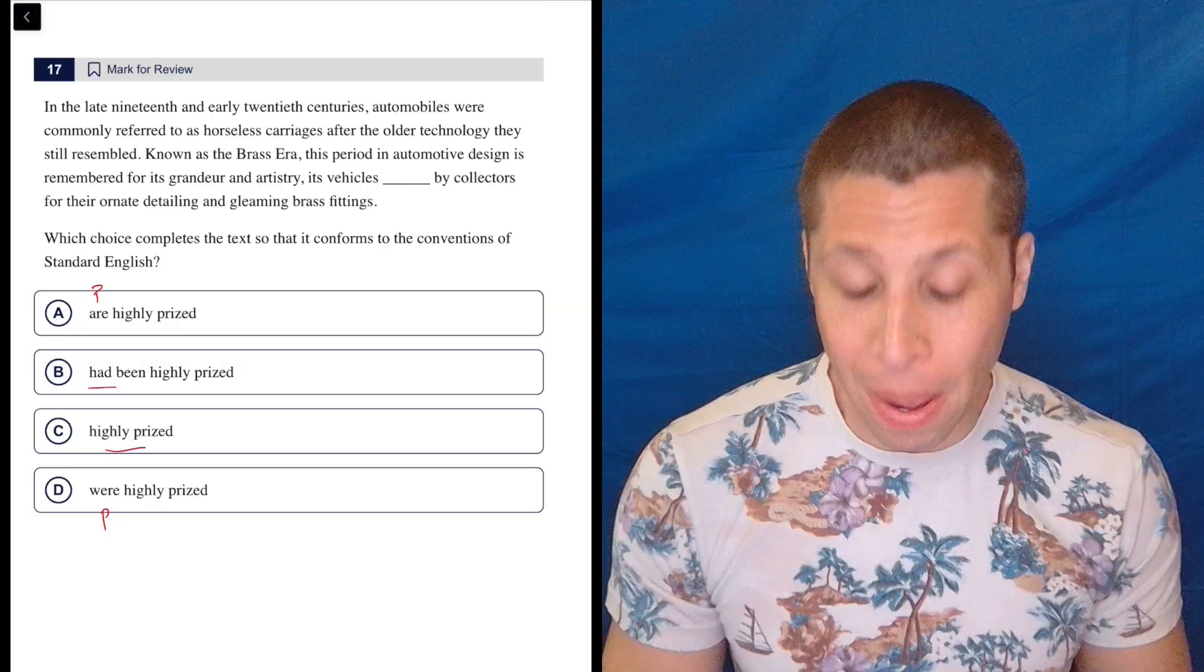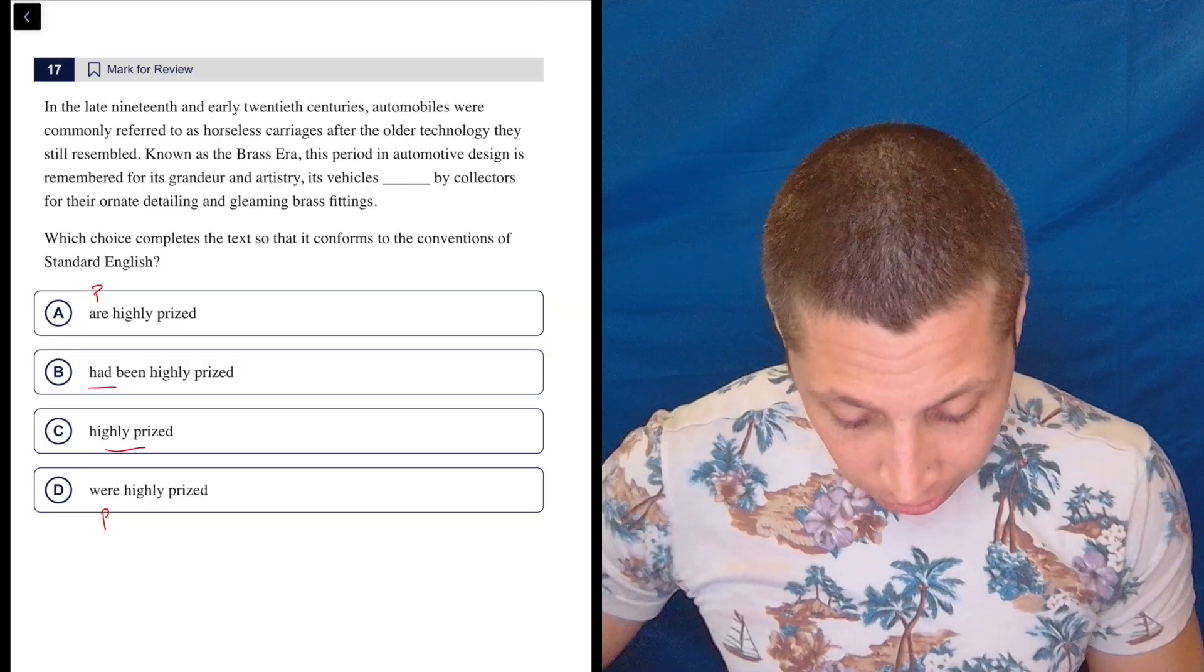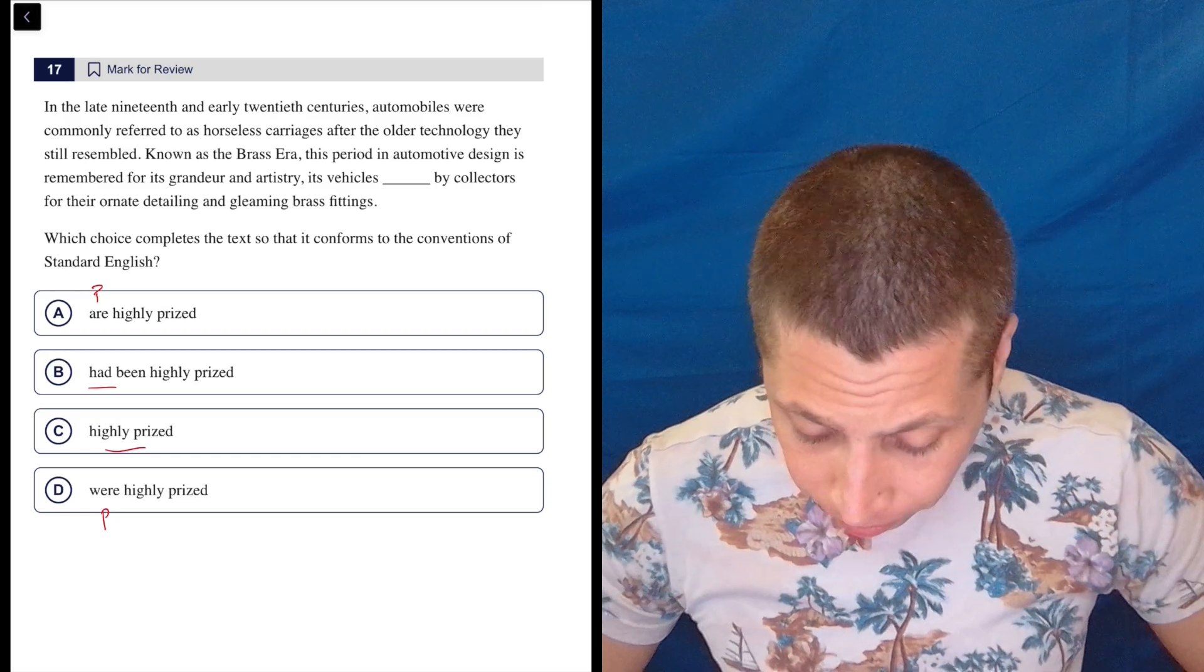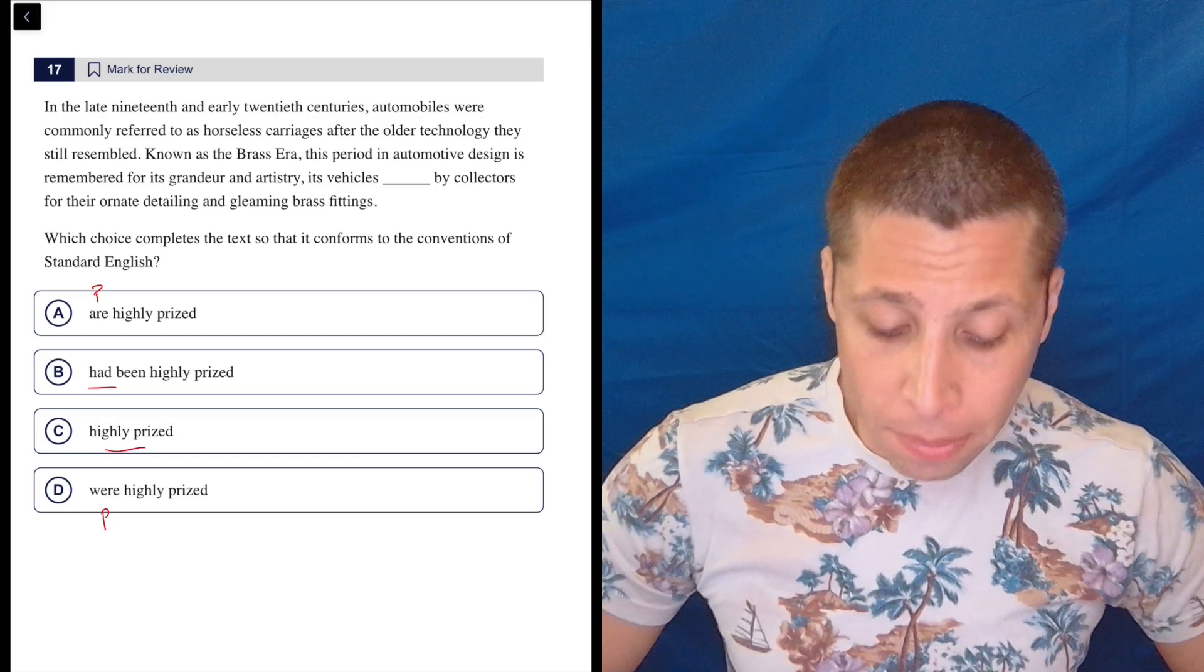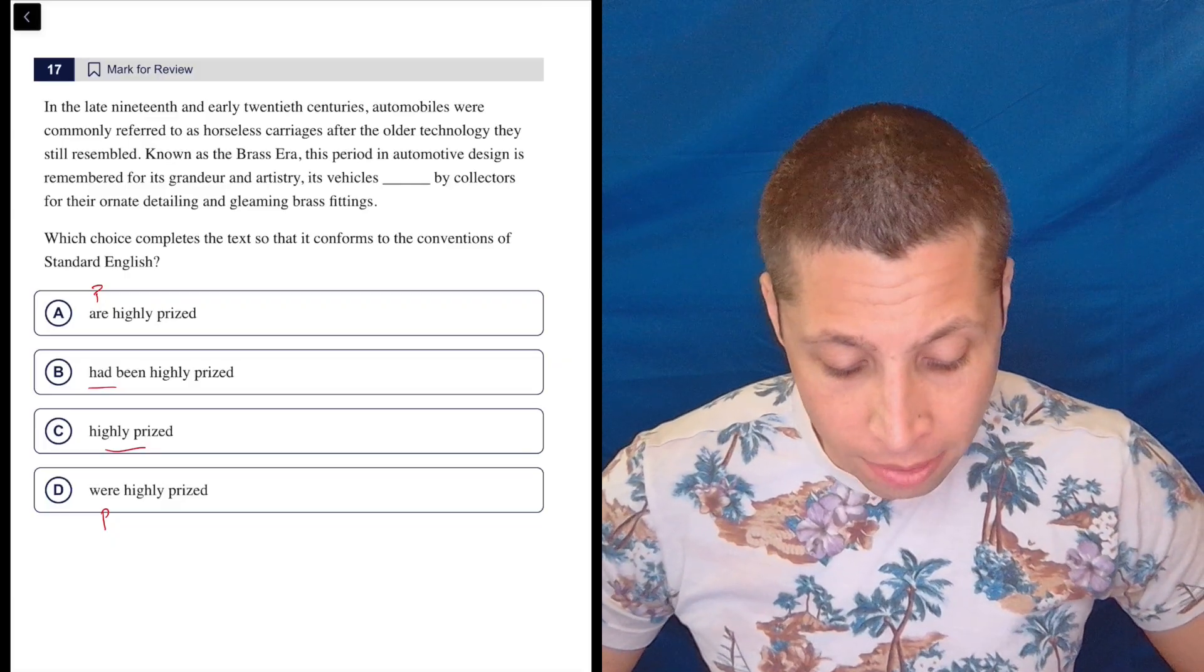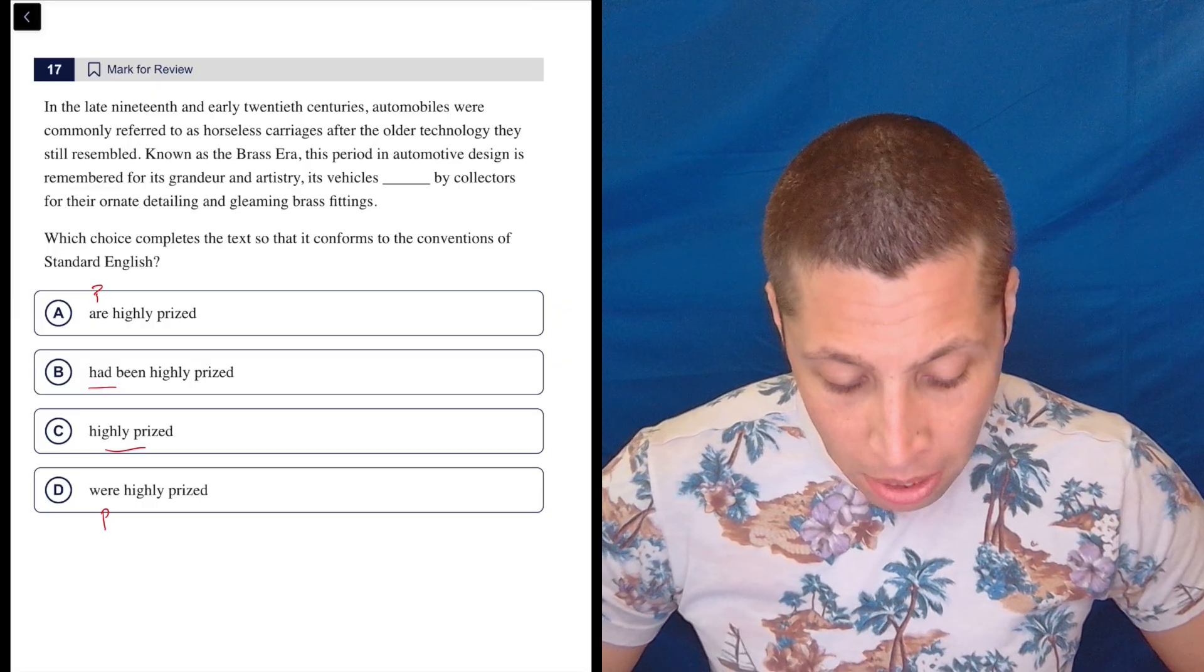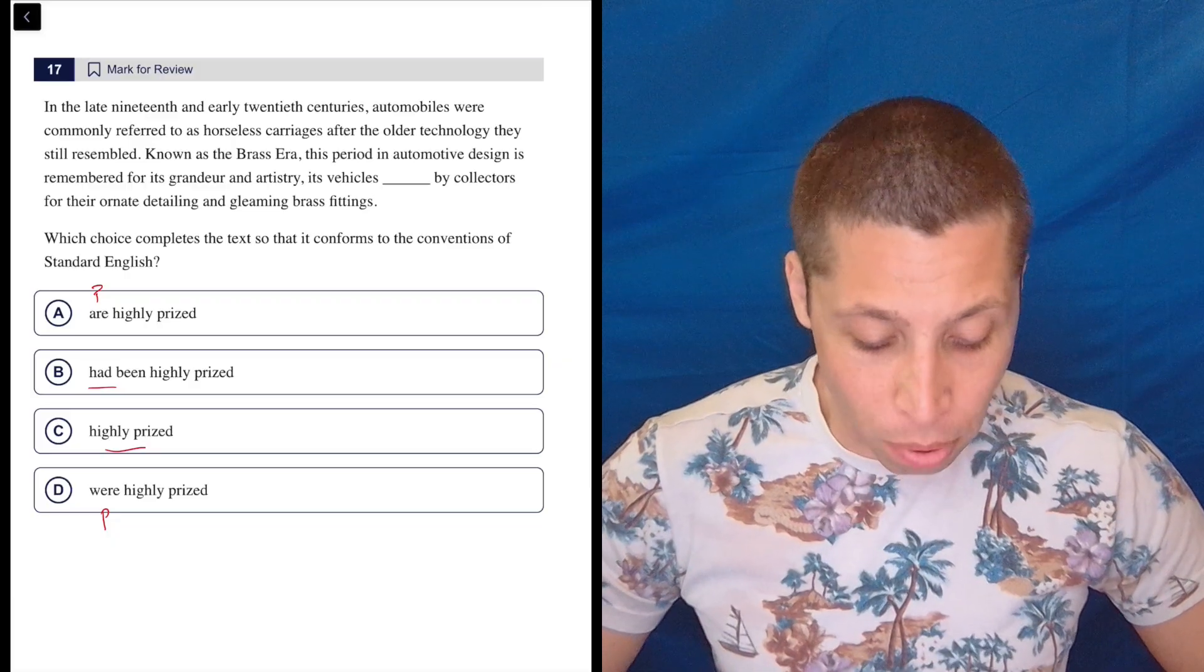It seems to mostly to me be about the tense of the verb. Genuinely, when does this take place? So let's take a look. We got to read the whole thing when it's about past, present, or future tenses. In the late 19th and early 20th centuries, automobiles were commonly referred to as horseless carriages after the older technology they still resembled. Known as the brass era, this period in automotive design is remembered for its grandeur and artistry, its vehicles blank by collectors for their ornate detailing and gleaming brass fittings.